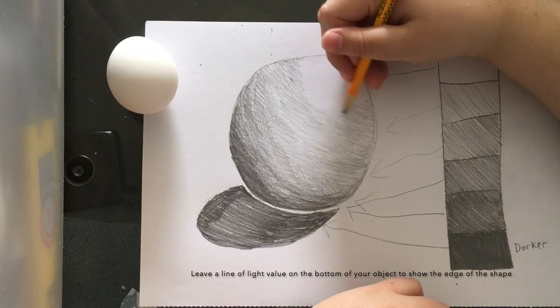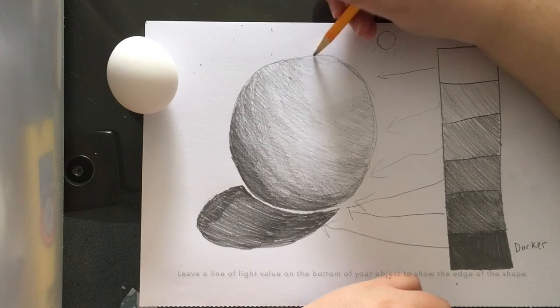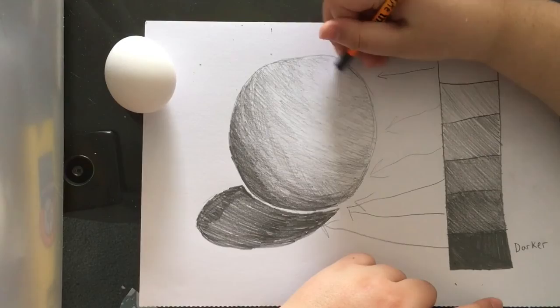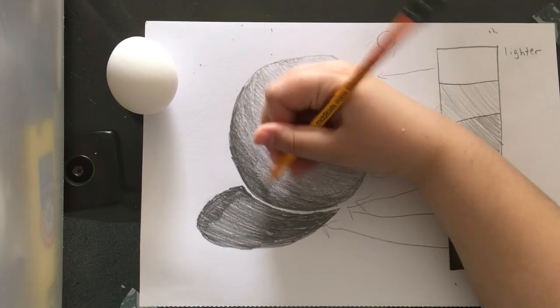This will slowly start to get rounder looking, and I'll go back and kind of reassess where my shadows and light values fall based on what I see. Observational drawing is all about what you see, and how you can convey what you see to your overall drawing.